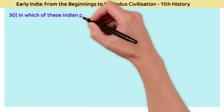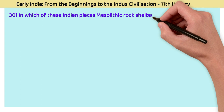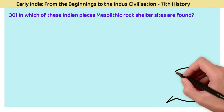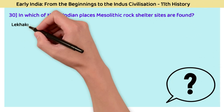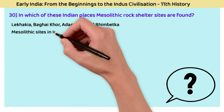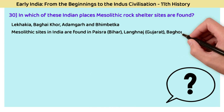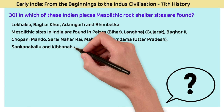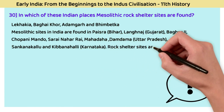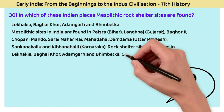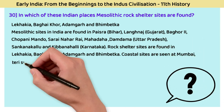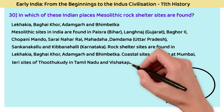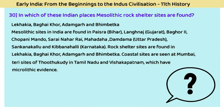Question 30: In which Indian places are Mesolithic rock shelter sites found? The answer is Lekhahia, Bagaikhor, Adamgarh, and Bhimbetka. Mesolithic sites in India are found at Paisra in Bihar; Langhnaj in Gujarat; Bagor, Chopani Mando, Sarai Nahar Rai, Mahadaha, and Damdama in Uttar Pradesh; and Sanganakkallu and Kibbanahalli in Karnataka. Rock shelter sites are found at Lekhahia, Bagaikhor, Adamgarh, and Bhimbetka. Coastal sites include Mumbai and terry sites of Tuticorin in Tamil Nadu and Visakhapatnam.